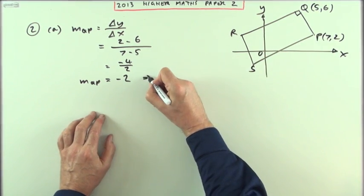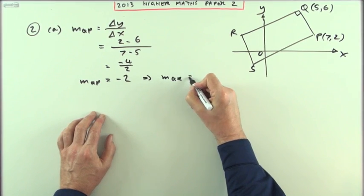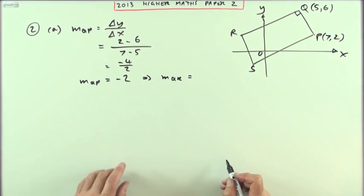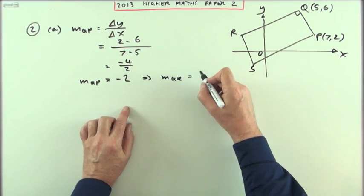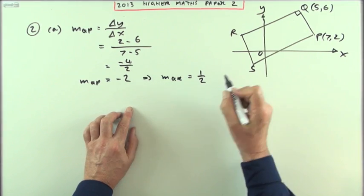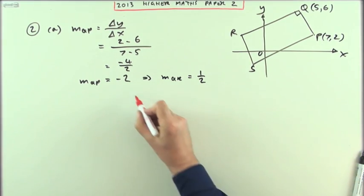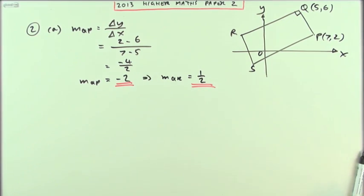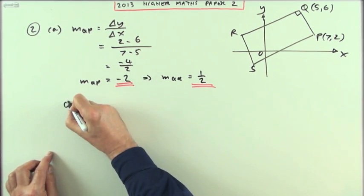So the gradient of QR then is going to be the perpendicular to it, which will be the negative of the reciprocal. So if that's negative 2, this is positive, and if that's 2, this will be 1 over 2.